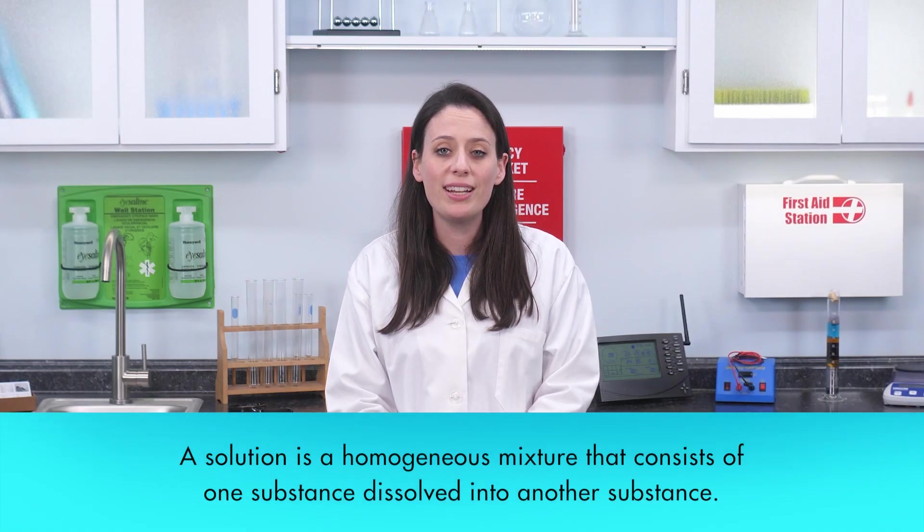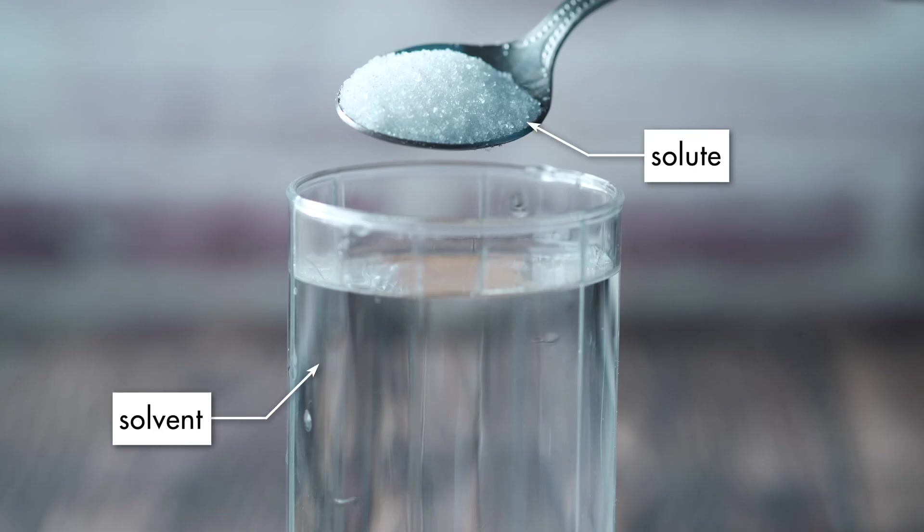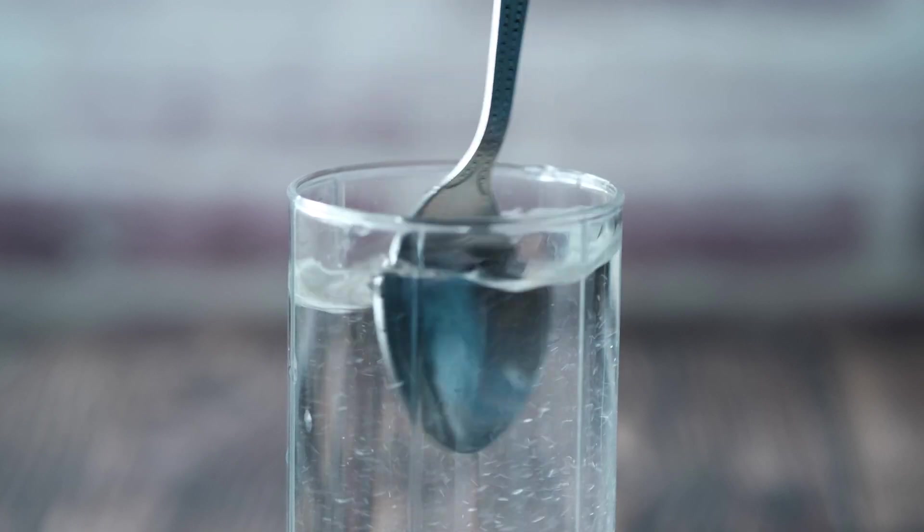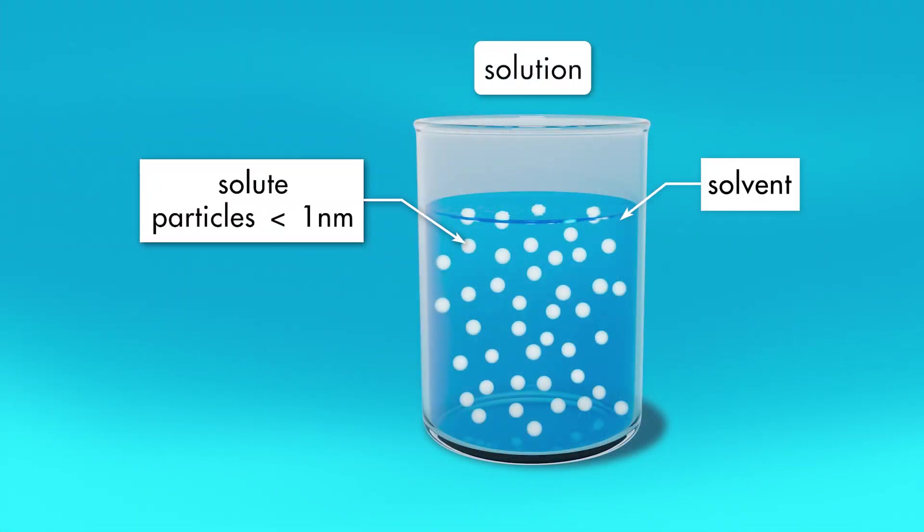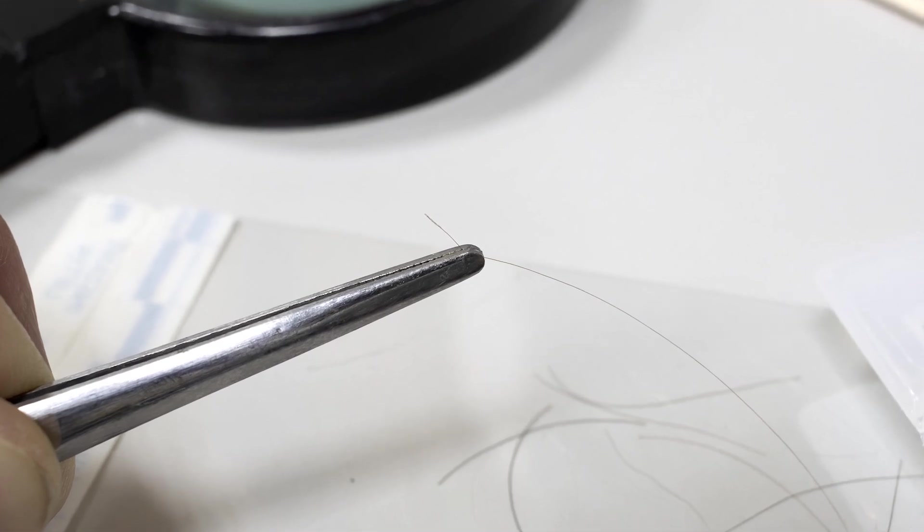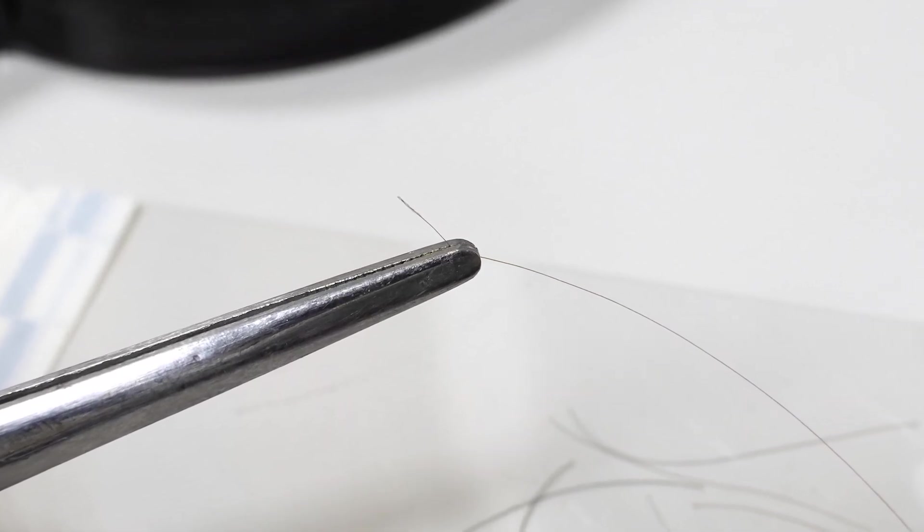A solution is a homogeneous mixture that consists of one substance dissolved into another substance. The substance being dissolved is the solute. The substance into which the solute is being dissolved is the solvent. The particles of solute in a solution are extremely tiny, less than one nanometer in diameter. A nanometer is one billionth of a meter, or 1 × 10^-9 meters. To put the size of a solute particle into perspective, consider this: approximately 100,000 solute particles could be laid side by side across one human hair.